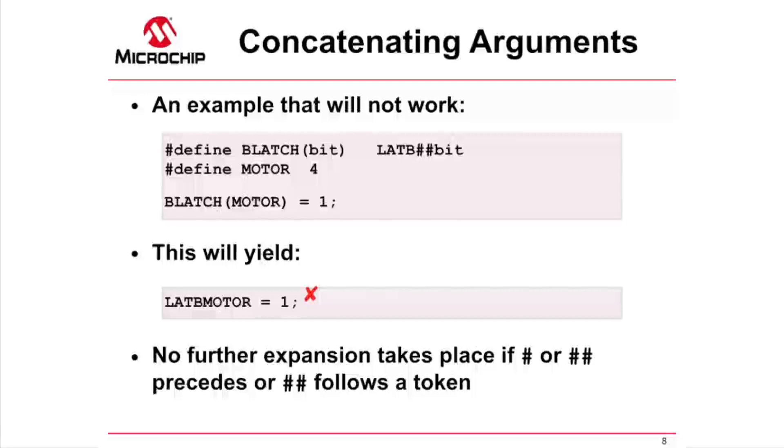The problem here is one of ordering. Macro arguments are not expanded prior to being inserted in the replacement text. A preprocessor rule states that tokens in the replacement text of a macro will only be replaced themselves if they are not preceded by a # or ## operator or followed by a ## operator. So in our example, after MOTOR is inserted into the replacement text for BLATCH, it will not be further expanded since it is next to the ## operator.